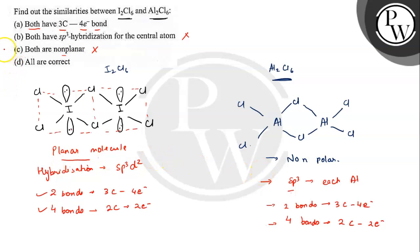So the correct answer for this question will be option A — both contain three-centered four-electron bonds. The correct answer is option A. Hope you have understood it well. Best of luck.